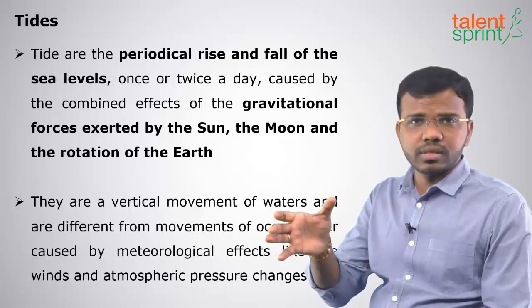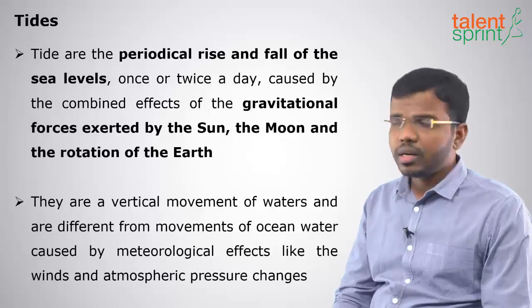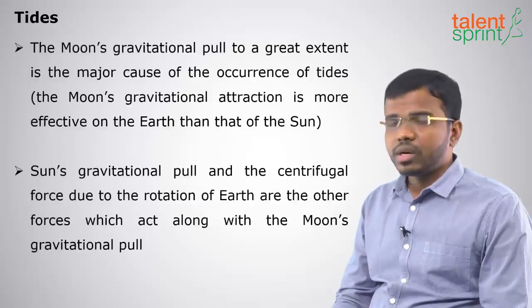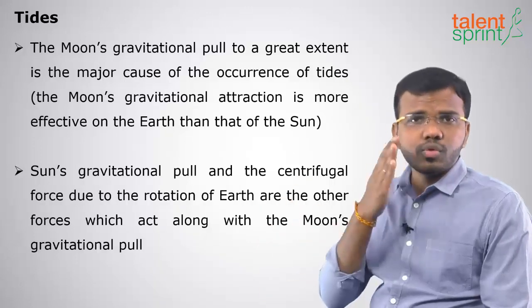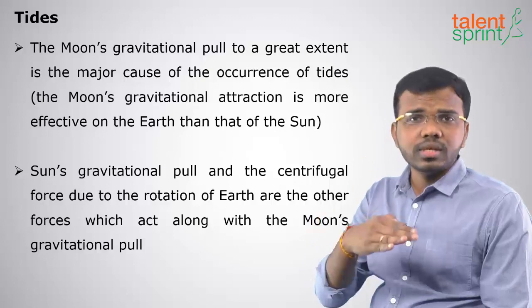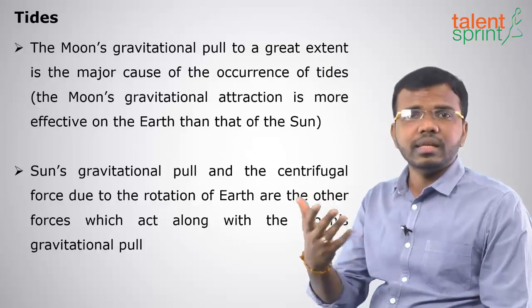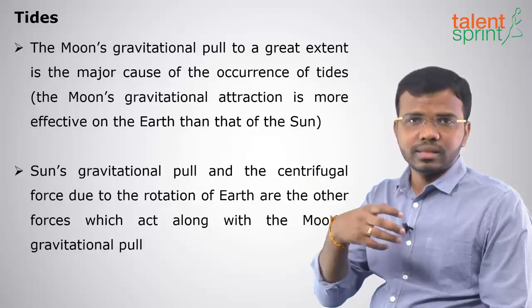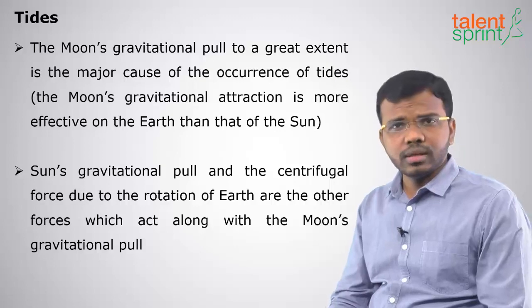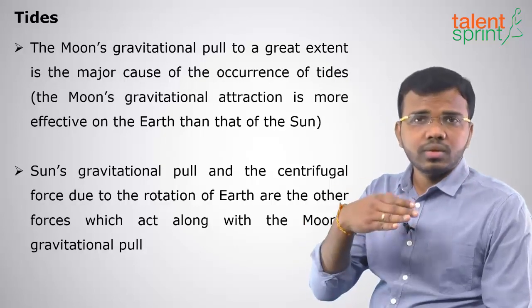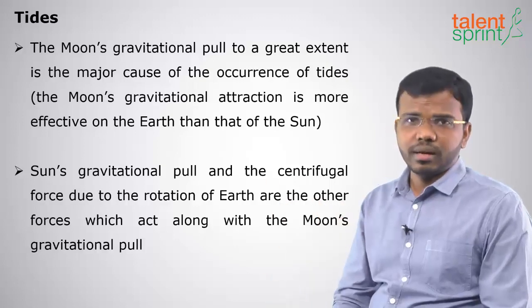When the sun, moon and earth are in different positions, different types of tides are formed. Among the gravitational pull between sun, moon and earth, as the moon is nearby to the earth, the gravitational pull of the moon is greater than the sun's. Both the sun and moon pull the earth, but the moon is nearer, so the moon's gravitational pull is more than the sun's.